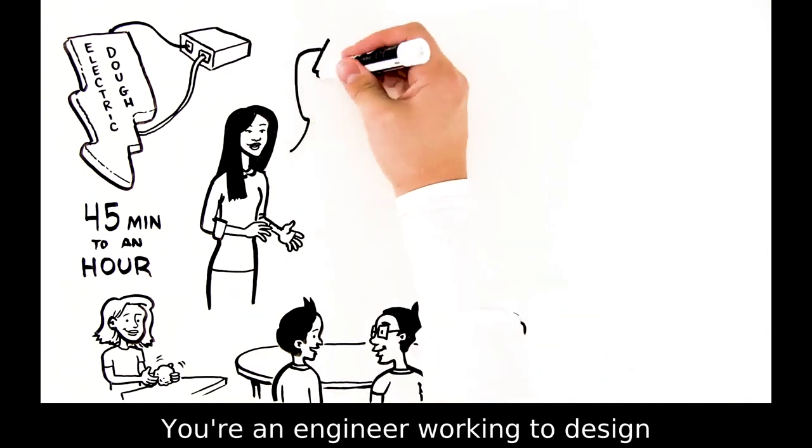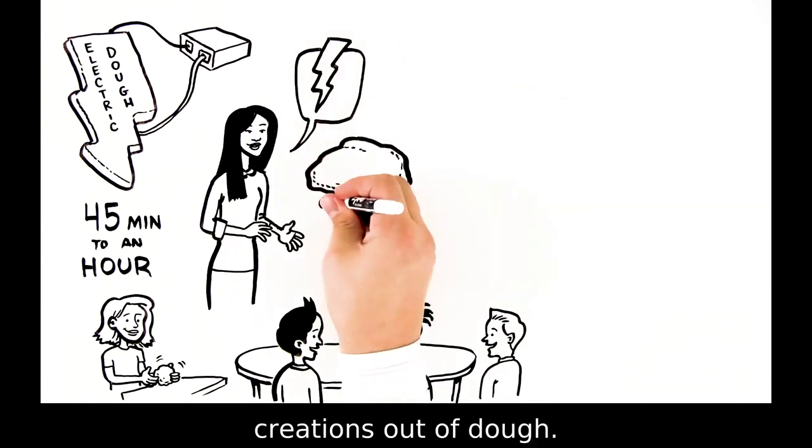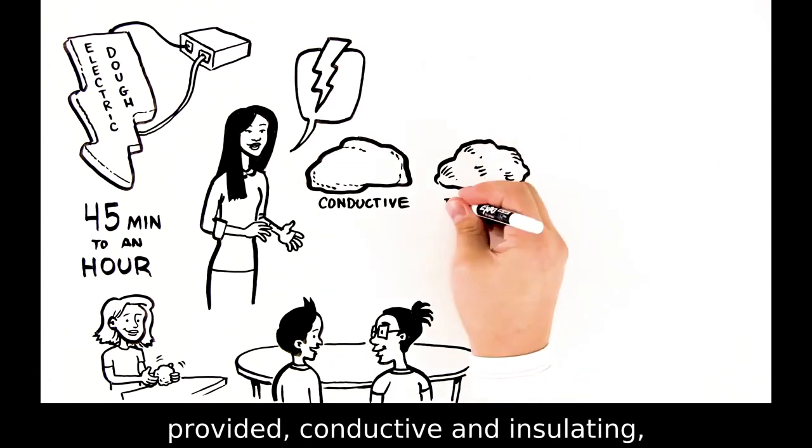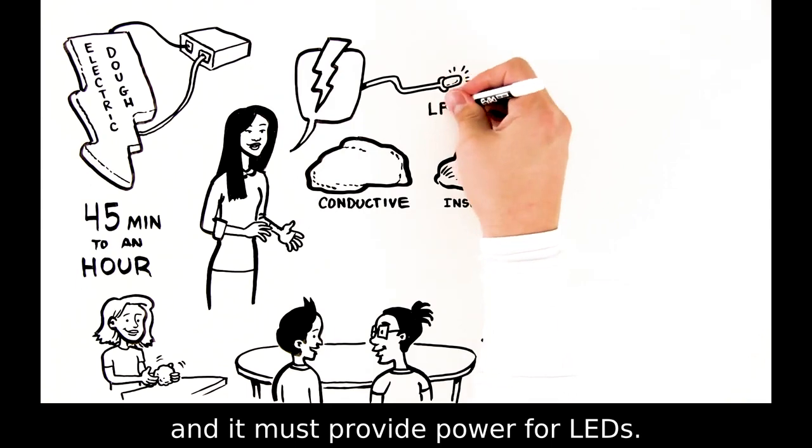You're an engineer working to design and build electricity conducting creations out of dough. You must use the two types of dough provided, conductive and insulating, to make your creation. And it must provide power for LEDs.